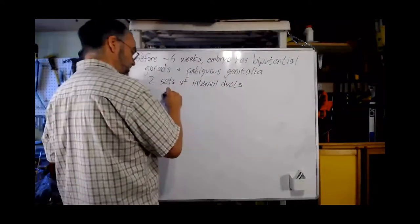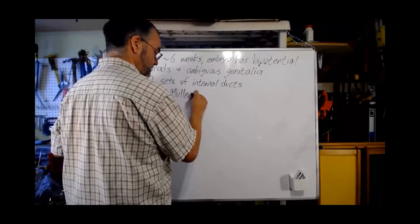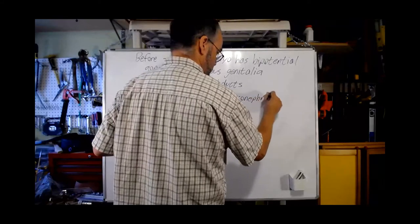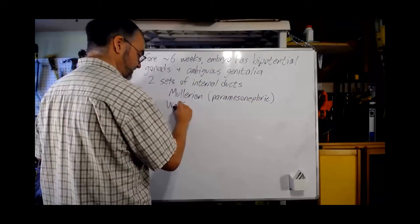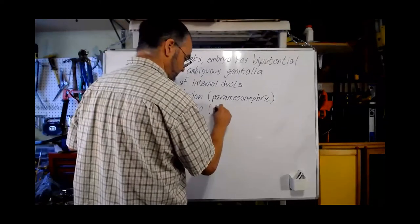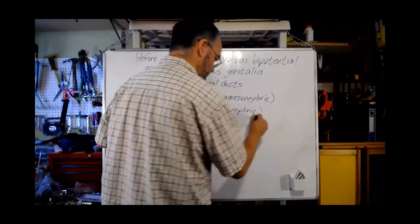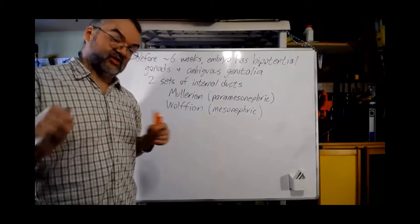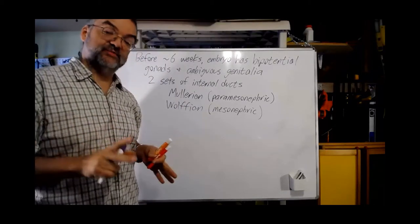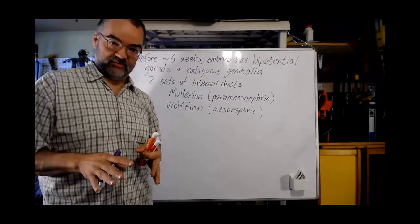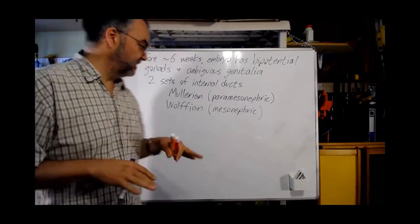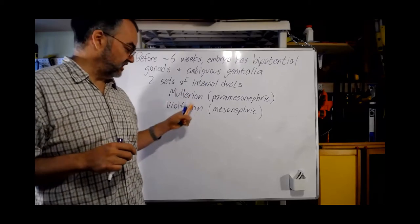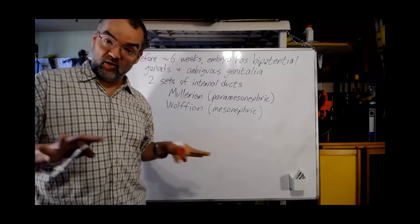These two sets of ducts are often called the Mullerian ducts, also known as the paramesonephric ducts, and the Wolfian ducts, also known as the mesonephric ducts. So we've got bipotential gonads which are not testes or ovaries but have the potential to be either, ambiguous external genitalia, and two sets of internal tubes — Mullerian and Wolfian — and all embryos have these early on.